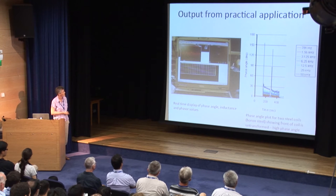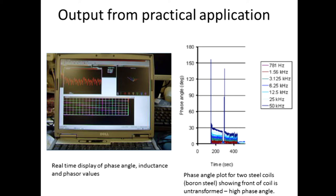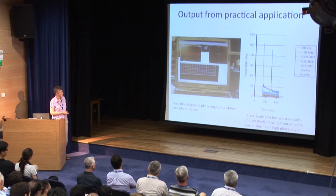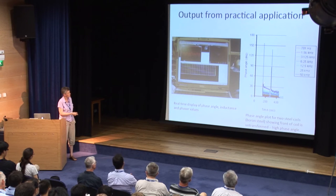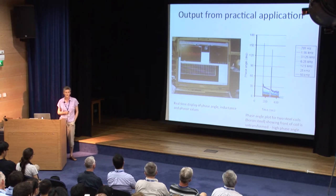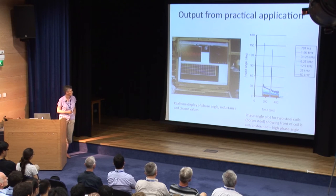This is the output — probably the most important graph. We have an output signal, in this case phase angle, with time, showing the signal for two coils as they come through. Initially we get a signal with a very large phase angle, which drops down to a lower phase angle for the remaining part of the coil. What this translates as: the first bit of the coil comes out before the water sprays are switched on — this is untransformed austenitic material. Then the water sprays are switched on and at that sensor position the rod is fully transformed into the pearlitic state, which is what was desired.